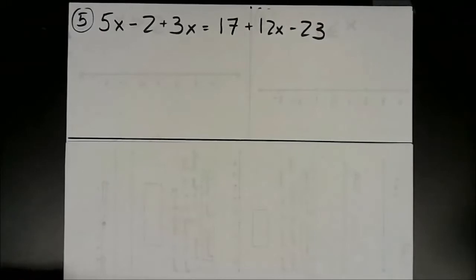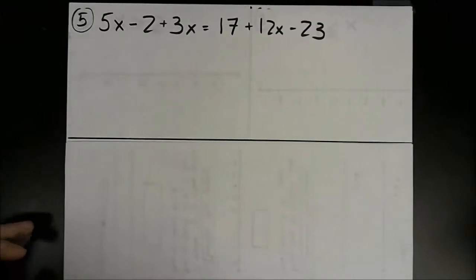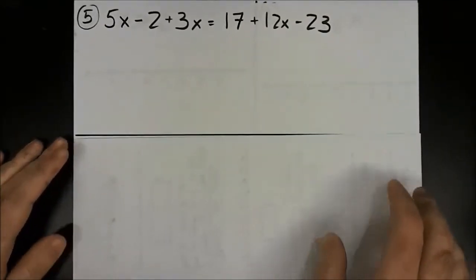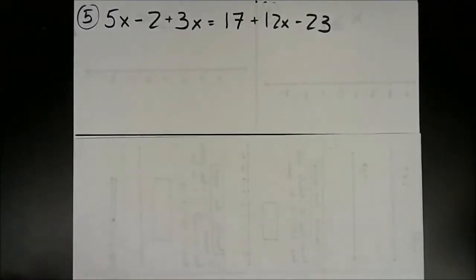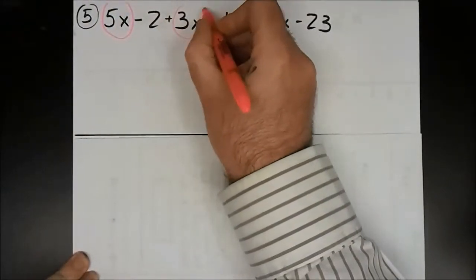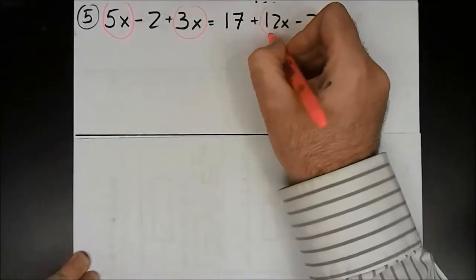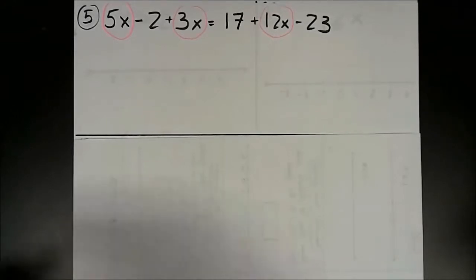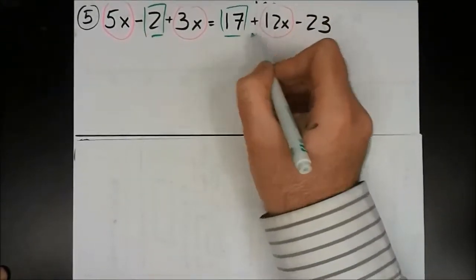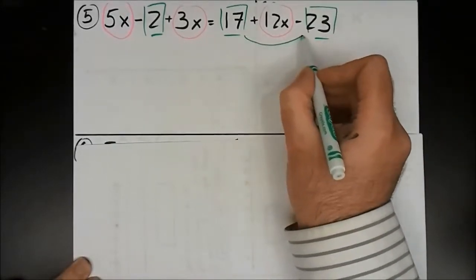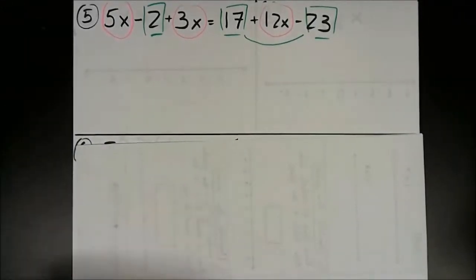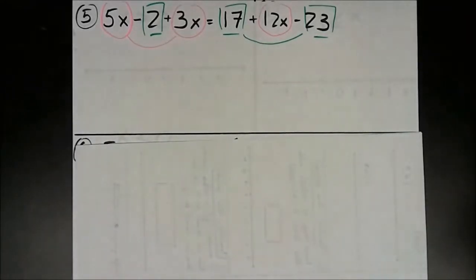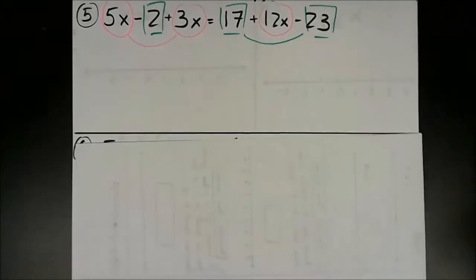Number 5 is pretty similar to numbers 2 and 3, except it's a bit bigger. The only thing different is that I have to combine some like terms, and I'm going to do that first — simplify before you solve. I have an x term here, x term here, x term here, and an x term here, but I can't combine this one with these two because it's being separated by the equal sign. And then I have constants here, here, and here that I can combine, as well as these variables.